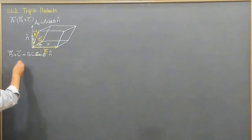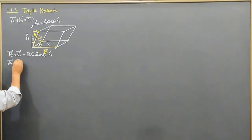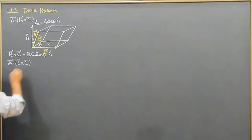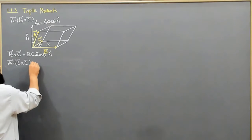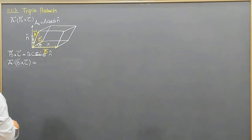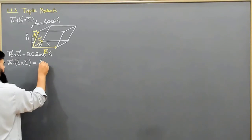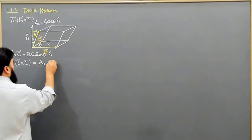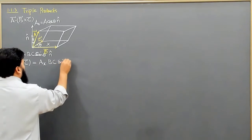If I write A·(B×C), then this is equal to: for the dot product, it will be only the X-component of A, and then B×C is BC·sinθ of the angle.